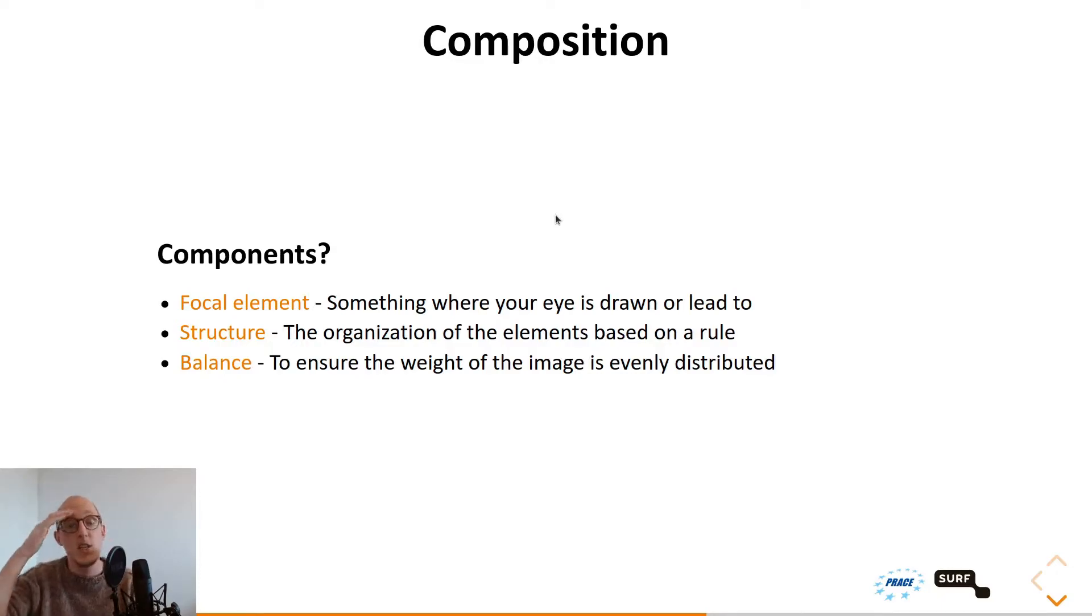But to make a nice composition, you do have some components within the image. You have the focal element, something where your eye is drawn or led to. You have the structure, the organization of these focal elements based on a rule. And you have the balance to ensure the weight of the image is evenly distributed on the image itself. And to understand all of the components, we're going to go into them individually, one by one.